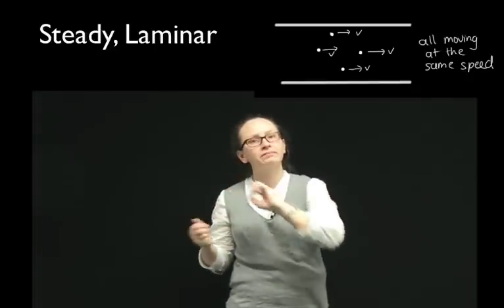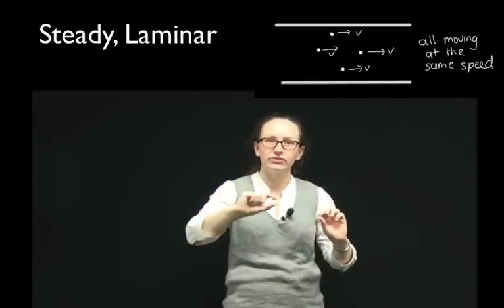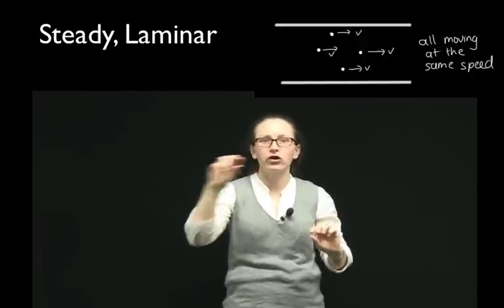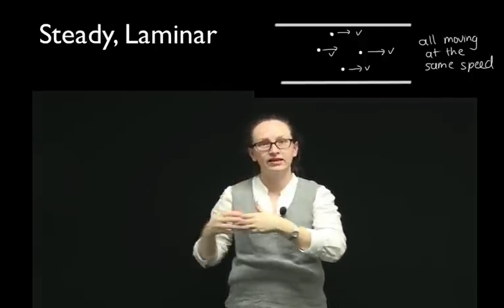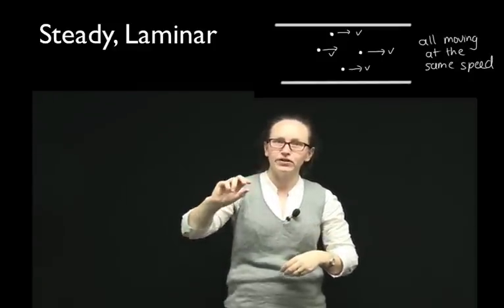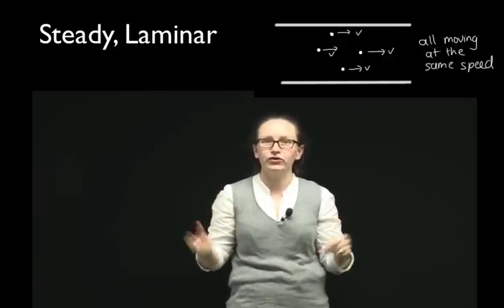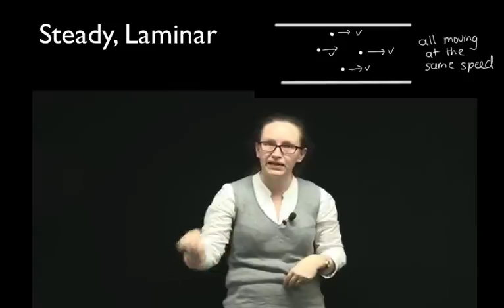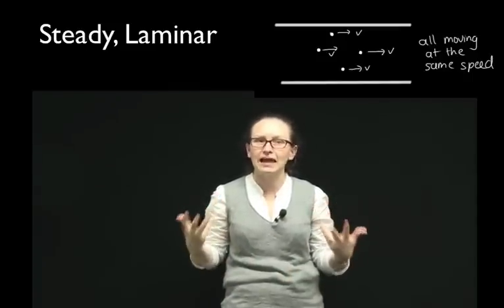Ideal fluid flow is the flow of fluids which is steady or laminar. A steady flow means that each of the little increments through that flow is moving with the same speed or velocity. So it doesn't matter if you're at the top of the fluid or at the bottom of the fluid or where you are in the river — if it's ideal fluid flow, you've got the same speed at each of those points. This is also called laminar flow.